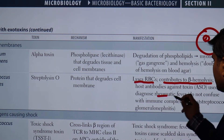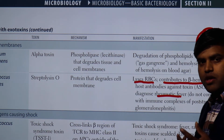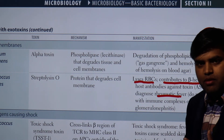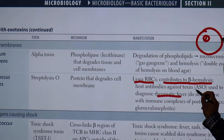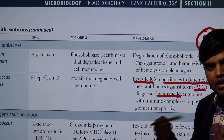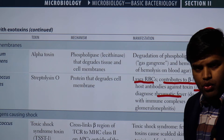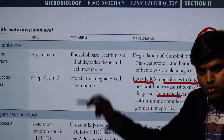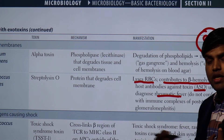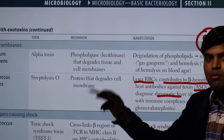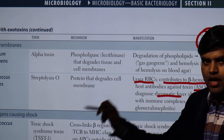The presence of streptolysin O in the body provides indirect evidence for diagnosing rheumatic fever. Streptolysin O acts as a foreign body — an antigen — and the body forms an antibody against it called anti-streptolysin O (ASO). If ASO is found in the blood, it indicates that streptolysin O was previously present, meaning the patient was infected with Streptococcus pyogenes.